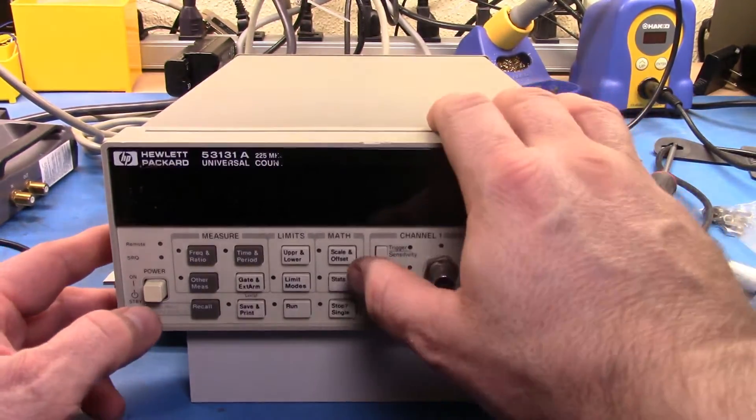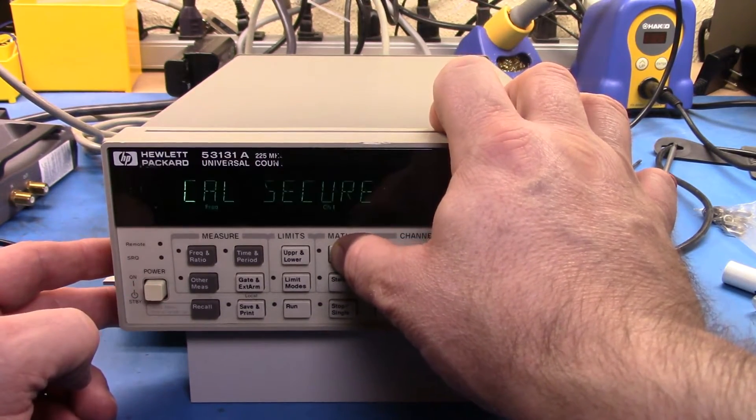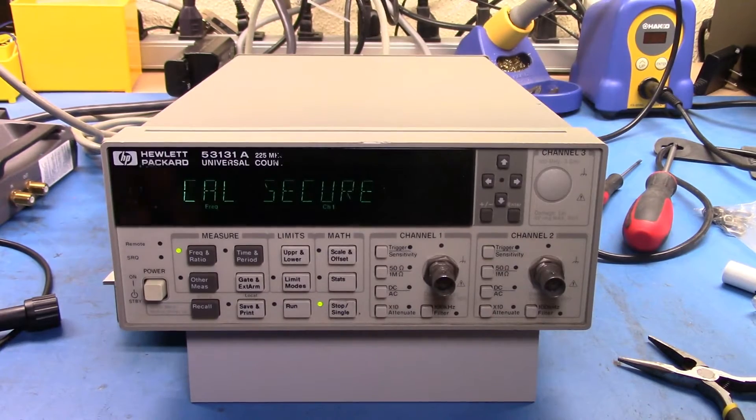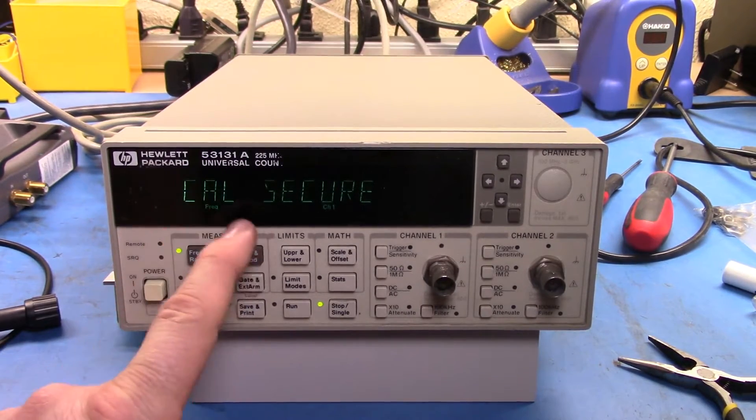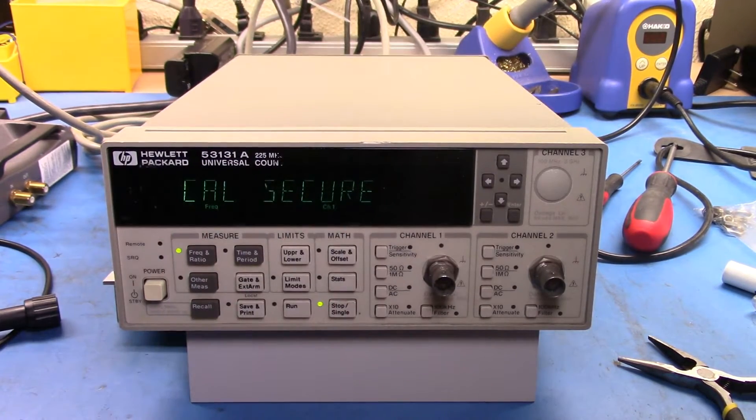It's afternoon here, drink of choice is a nice hot chocolate from the Keurig machine. So how you get to the calibration menu is by holding down the scale button and then cycling the power. And what it will do is bring you to either this menu here saying CalSecure or menu that says CalUnsecure.